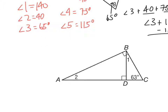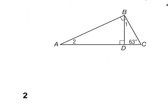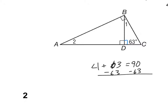This looks pretty simple but it's actually kind of tricky. The first thing I notice is that if this angle is a 90-degree angle, then this adjacent angle is also 90 degrees because they are supplementary. So if this is a right triangle, I know that the two non-right angles are complementary and I can write angle 1 plus 63 degrees equals 90.